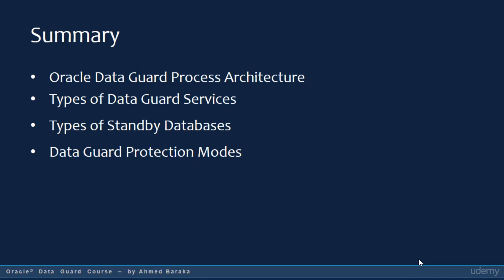So that's it for this lecture. We talked about the processes involved — LNS, RFS, and Apply Services processes. We talked about types of Data Guard services: Redo Transport Services, Apply Services, and Role Transitions, which we'll cover in the next lecture. We talked about types of standby databases: physical standby database, which allows only read-only operations, and logical standby database, which allows read-write operations. Finally, we talked about Data Guard protection modes — Maximum Performance, Maximum Availability, and Maximum Protection. We will talk more about Oracle Data Guard concepts in the next lecture.